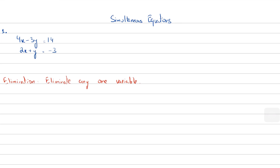Before you eliminate any one variable, you have to decide which variable you are going to eliminate. So here we have two equations: 4x minus 3y equals 14 (equation one) and 2x plus y equals minus 3 (equation two). I've decided to eliminate y. In order to do elimination, you need a positive value and the same but negative value in the other equation — the coefficients should be the same in value but opposite in sign.